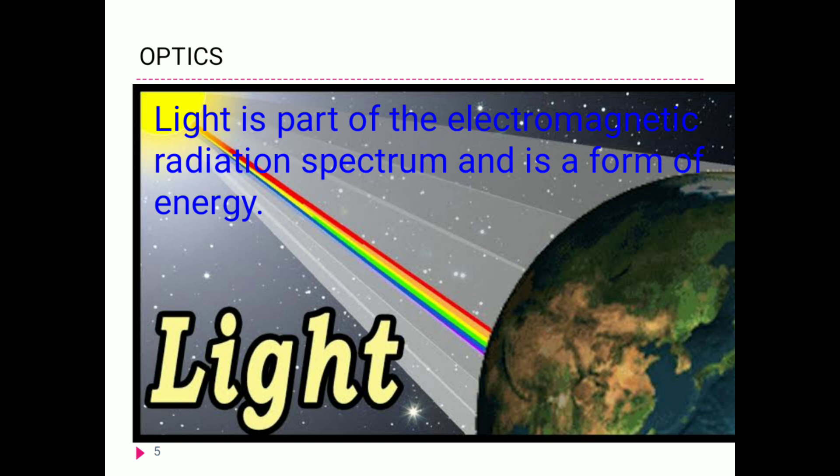To understand optics, light is essential. Light is the agent which stimulates our sense of sight. We understand the world around us with the help of information reaching our five sense instruments, namely eyes, ears, nose, tongue, and skin. Light is a part of the electromagnetic radiation spectrum and it is a form of energy.